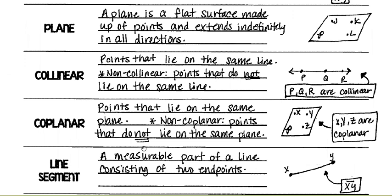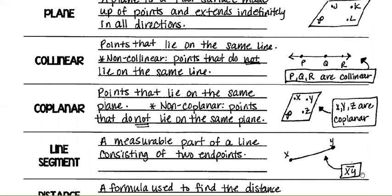Line segment: a measured part of a line consisting of two endpoints. Think of a piece of string — it has a beginning and an end. This line segment has two definite endpoints: point X and point Y. This is how you write line segment XY.